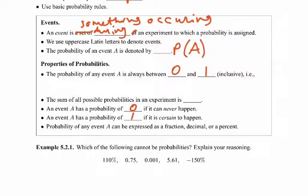The sum of all possible probabilities of an experiment is 1 — all of your probabilities of any event that could occur during an experiment has to add up to 1 or 100%. We can express probability as either a fraction between 0 and 1, a decimal between 0 and 1, or the percent version of that decimal.